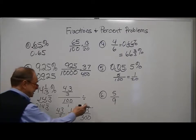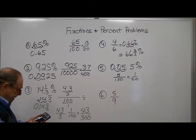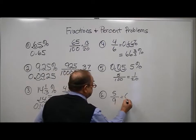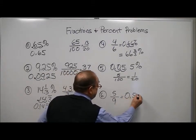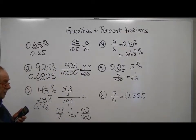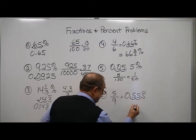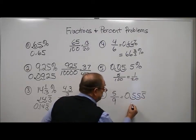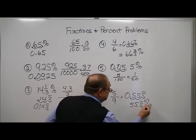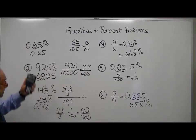In this case, 5 over 9, 5 divided by 9 is 0.555 repeated. To put it in percent form, move our decimal over. This would then be 55.5 with a fraction bar repeating. And these are our first few.